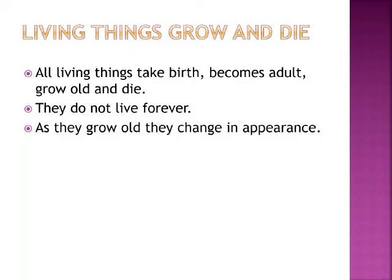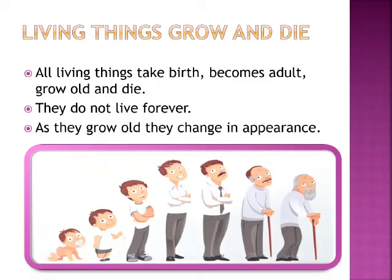The next feature is living things grow and die. All living things take birth, become adult, grow old and die. They do not live forever. As they grow old, they change in appearance. The picture here shows a baby, the baby grows to a child, child to a boy and then a man, and the man grows older. In each stage, the person is changing in appearance.